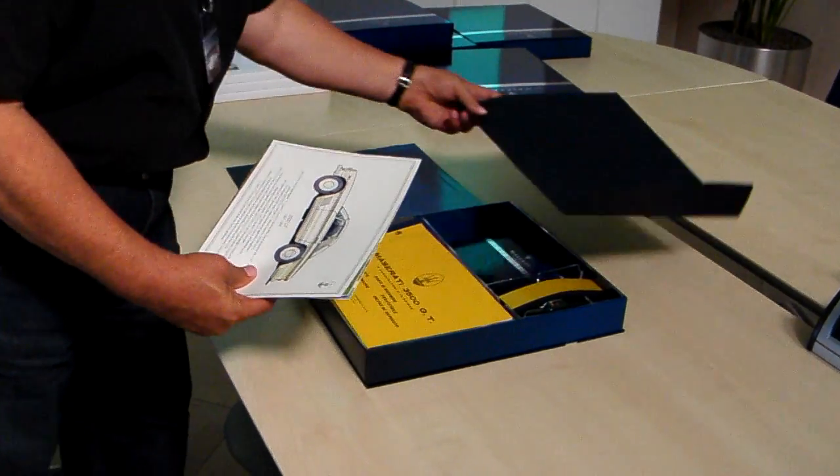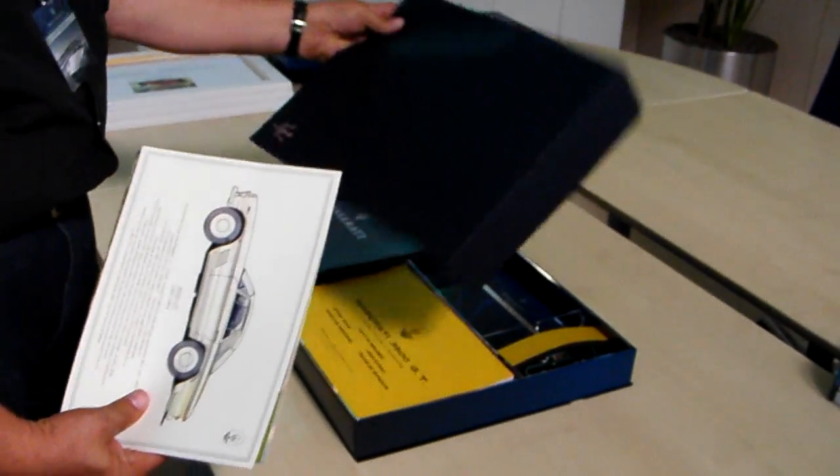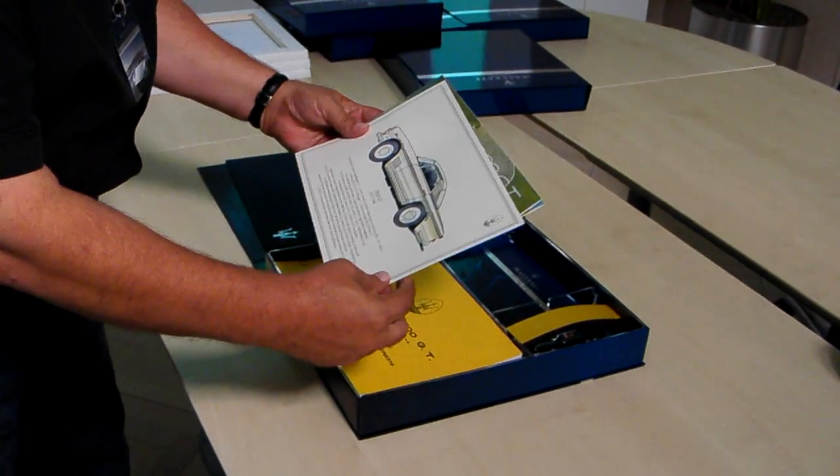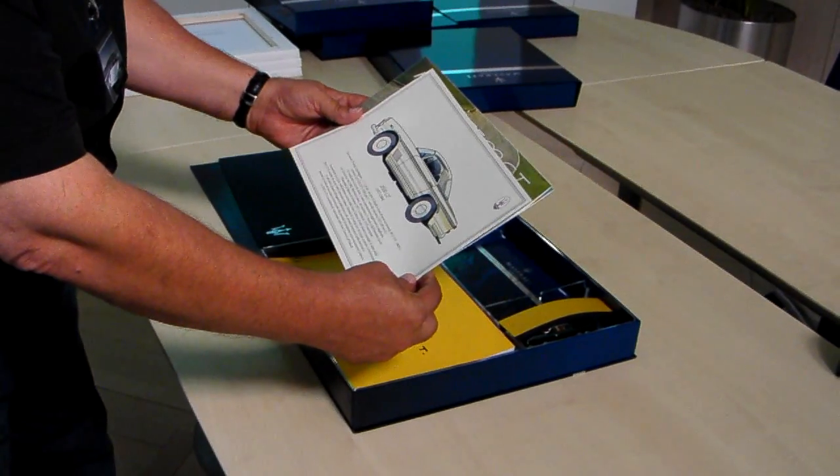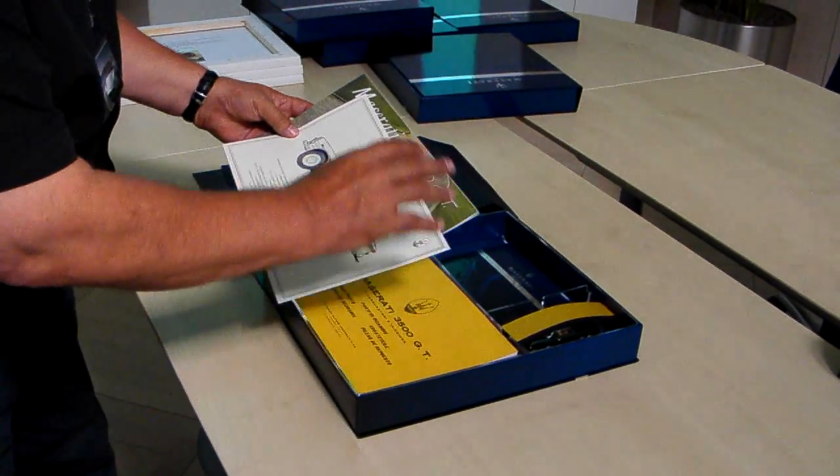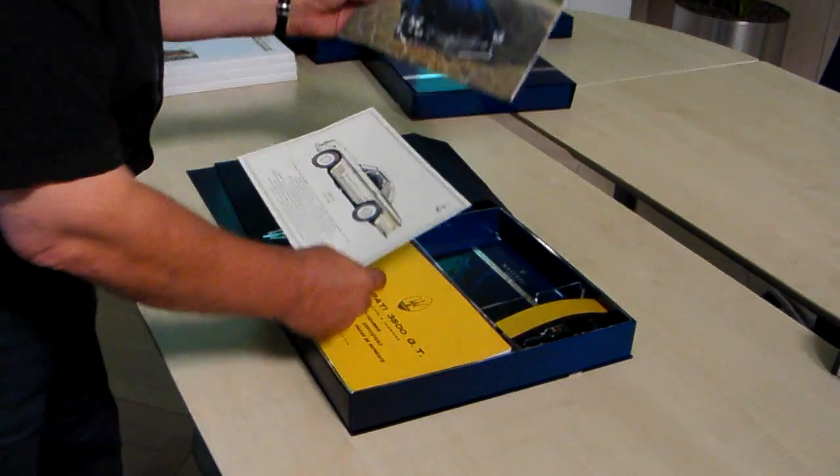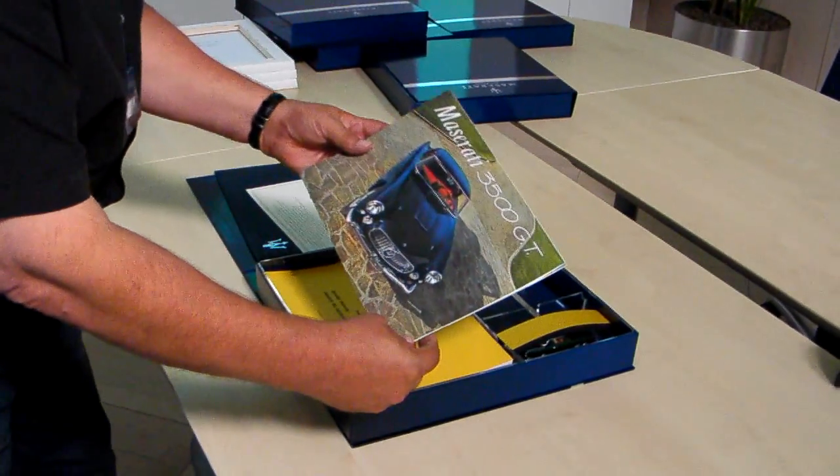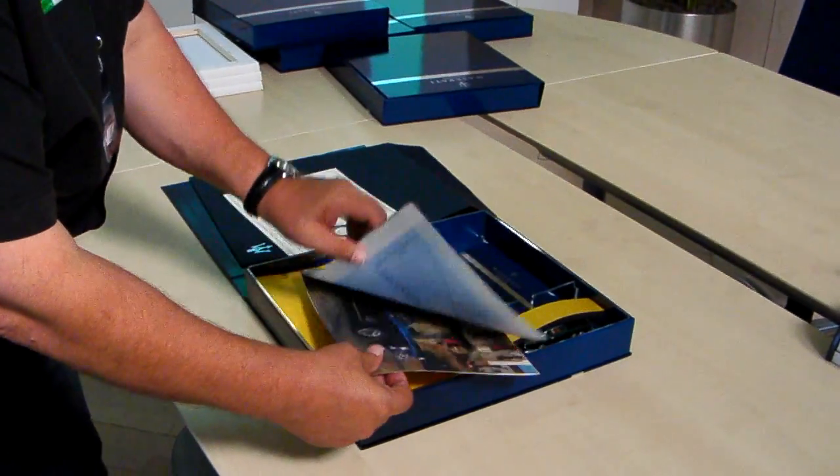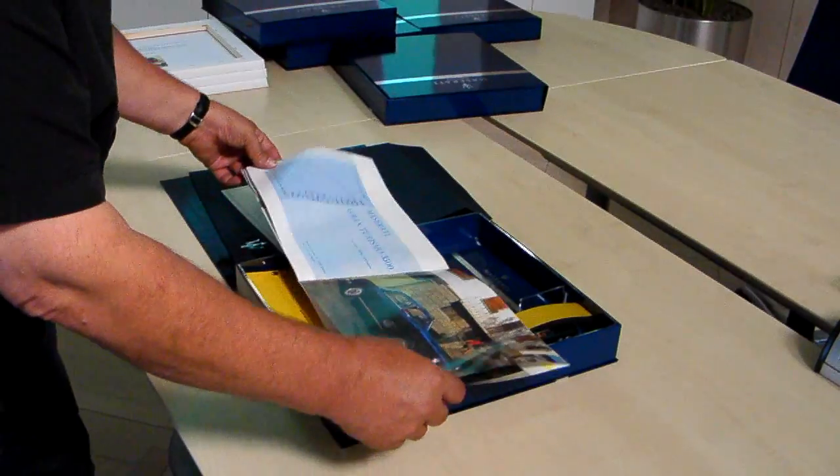there's a nice big envelope in here, and inside the envelope you're going to find a suitable for framing drawing of the 3500GT. The kit that we're looking at here is the 3500GT, and it's a very nice reproduced brochure.